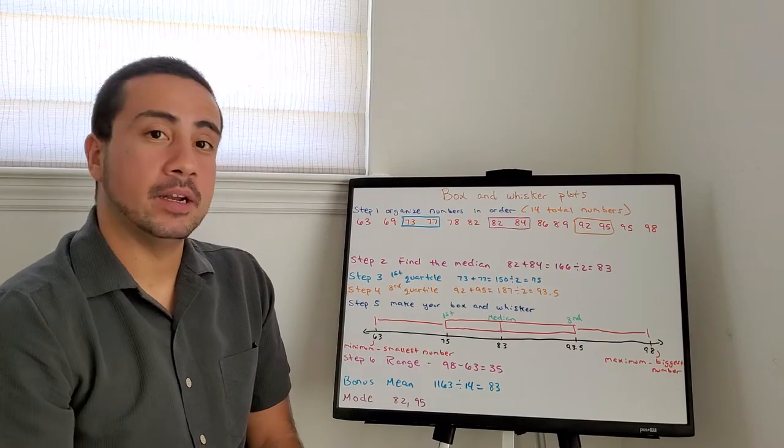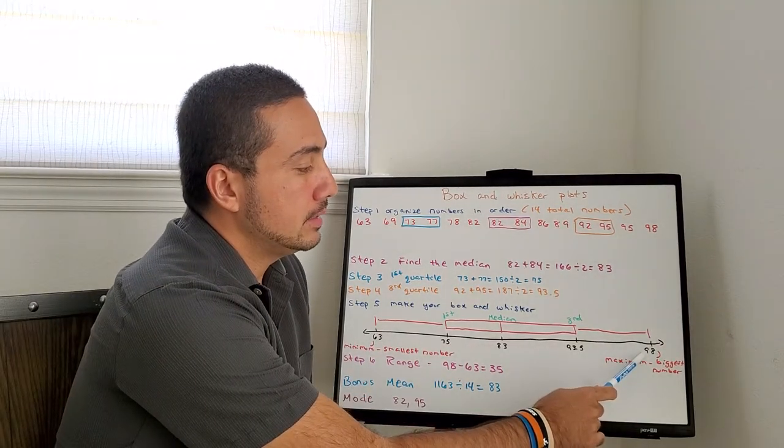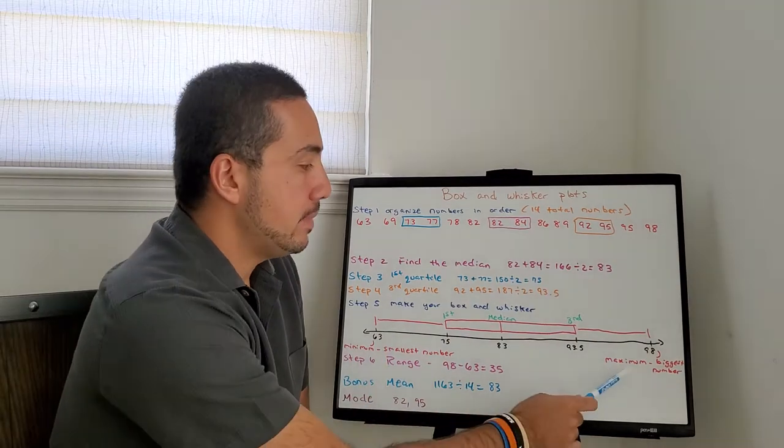Step 5, we're going to make our plot. Lowest number, 63. Biggest number, 98. Minimum and maximum.